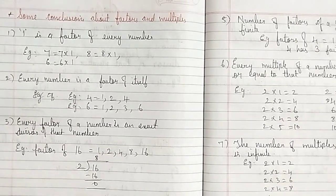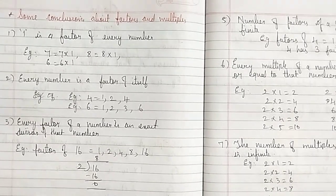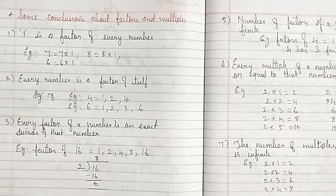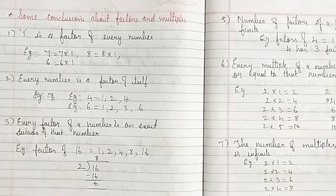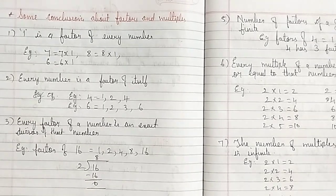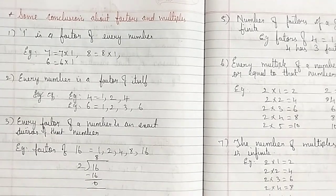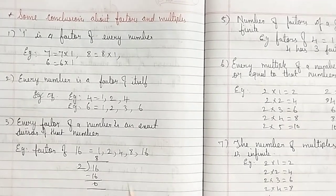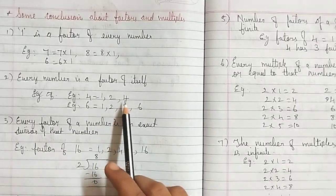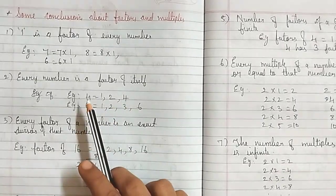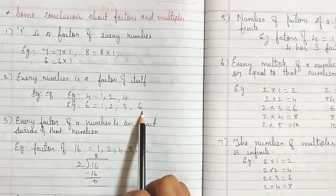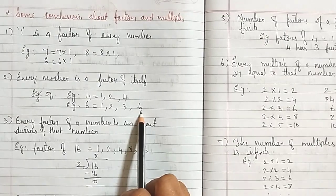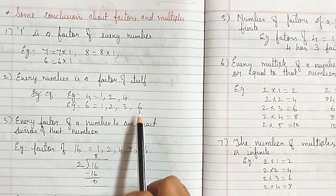Second: Every number is a factor of itself. For example, the factors of 4 are 1, 2, and 4. The factors of 6 are 1, 2, 3, and 6. Here you can see that 4 is a factor of 4, and 6 is a factor of 6. So every number is a factor of itself.